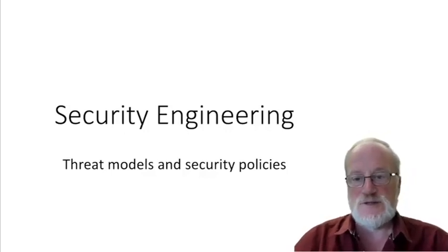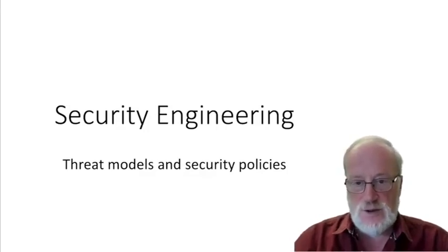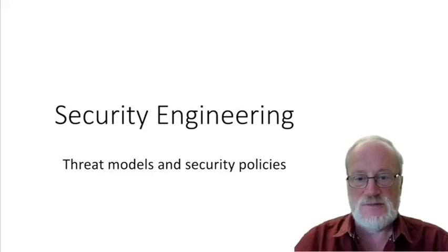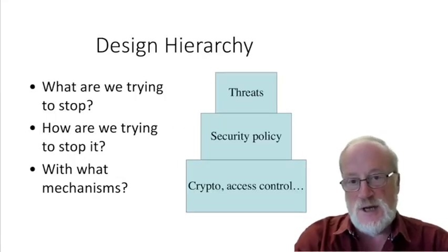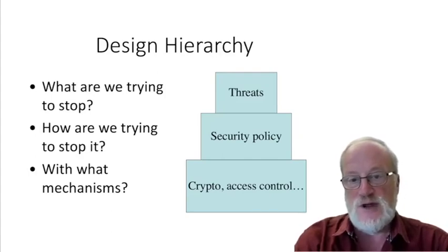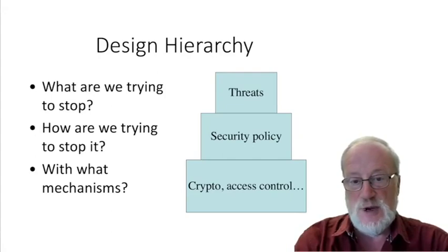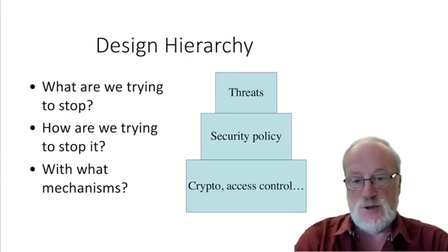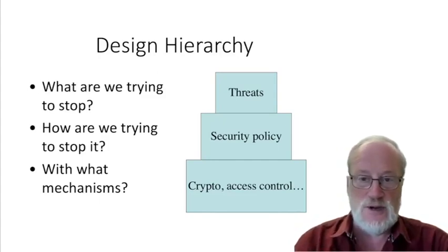In this second lecture of the security engineering course, we're going to follow through on threat models and on security policies. The design hierarchy described in the first lecture starts off from threats — what are we trying to stop — and then moves on to security policy — how are we trying to stop it — and in later lectures we'll look at mechanisms such as cryptography and access control.